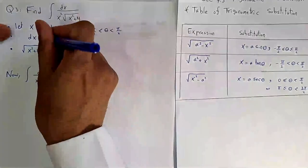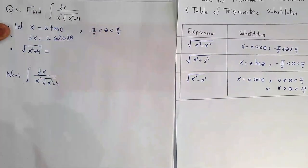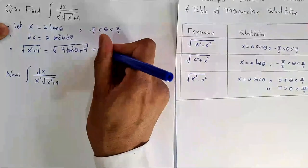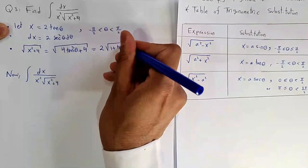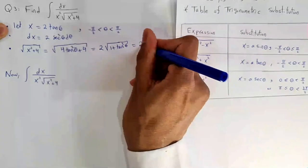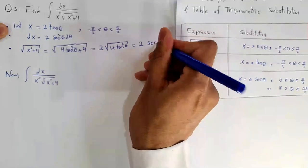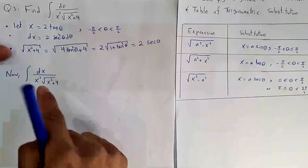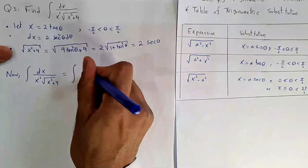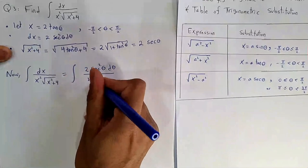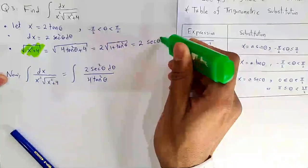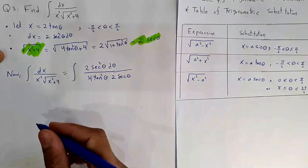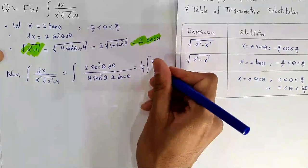Plugging back: ∫(2 sec²θ dθ)/(4tan²θ · 2 sec θ). Simplifying 2·2 and one secant cancels, giving (1/4)∫sec θ/tan²θ dθ. Converting to sine and cosine: sec θ/tan²θ = cos θ/sin²θ. This can be written as cot θ · csc θ dθ, so the integral is (1/4)(-csc θ) + C.